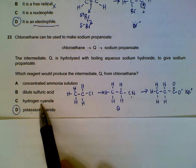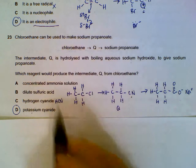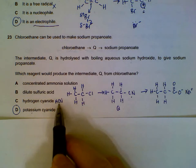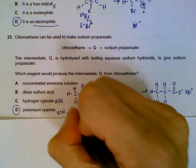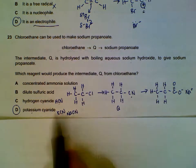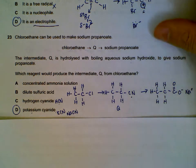Do not confuse it with hydrogen cyanide. HCN, hydrogen cyanide, is used to step up the carbonyls - step up ketones and step up aldehydes. Potassium cyanide, sodium cyanide is used to step up halogen alkanes. So don't confuse between hydrogen cyanide and potassium cyanide.